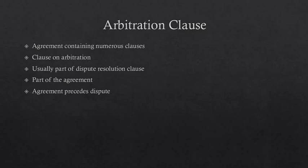Arbitration agreements can be either in the form of arbitration clauses forming a part of an agreement, or in the form of a separate arbitration agreement. If it is in the form of a separate arbitration agreement, then it is called in arbitration parlance a submission agreement.